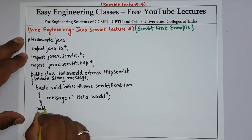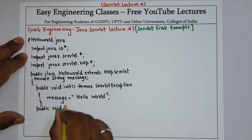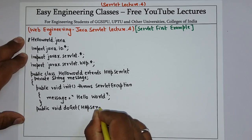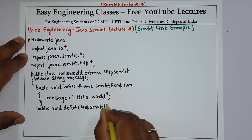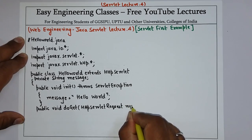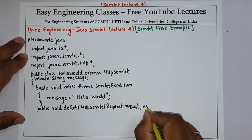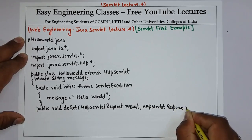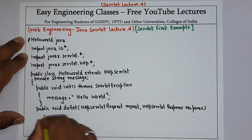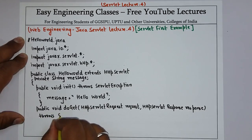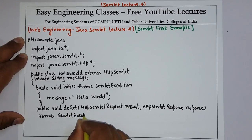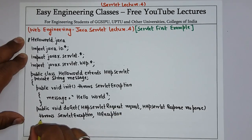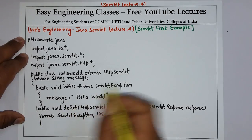Now define the doGet method: public void doGet. In this method you have to write the parameters — HttpServletRequest and also create an object of HttpServletResponse. This method throws both ServletException and IOException. This method will be called by the service method of the servlet.